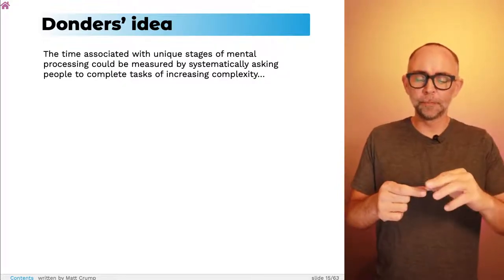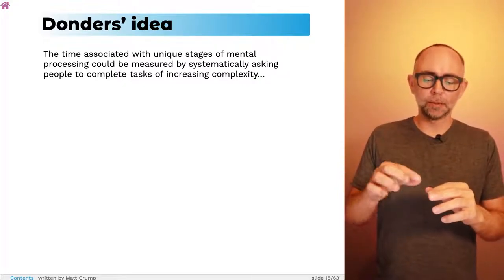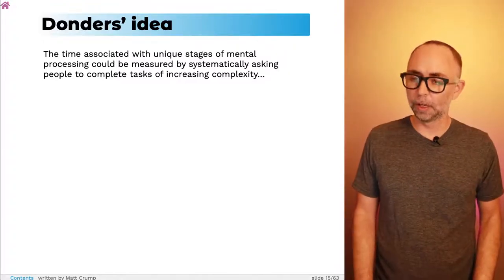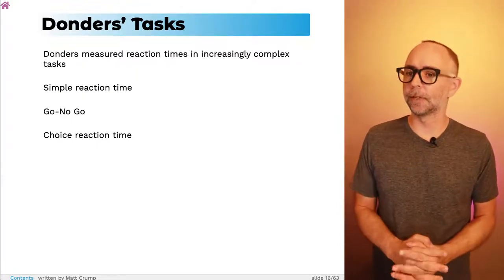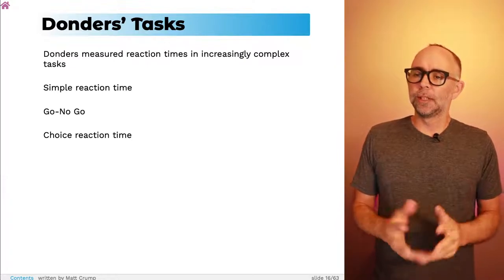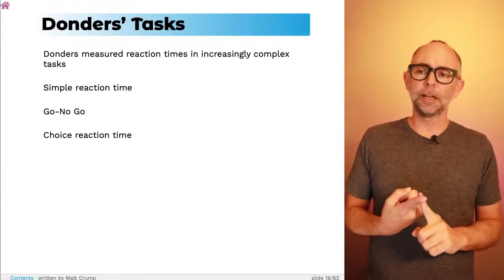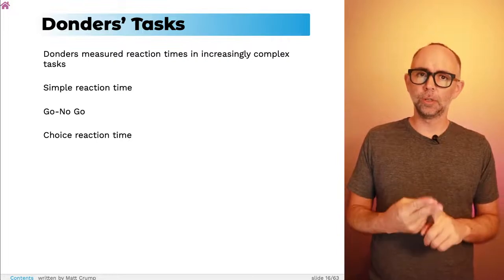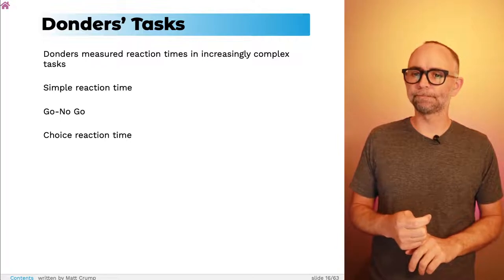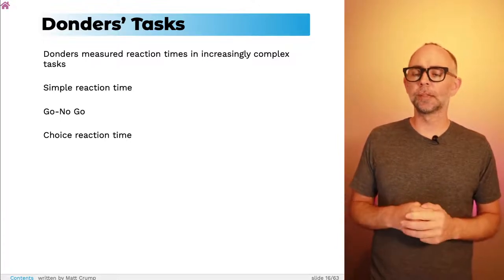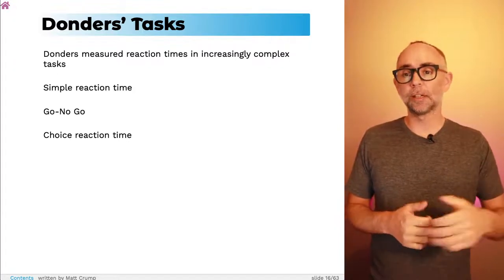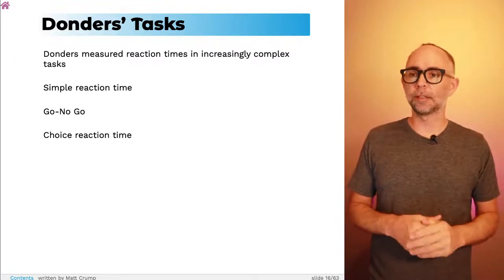He was interested in developing tasks that he could use to make claims about possible fundamental aspects of cognitive processing. He came up with three different tasks: a simple reaction time task, a go/no-go task, and a choice reaction time task. I'll put some links on the learning module so you can go try these tasks yourself.